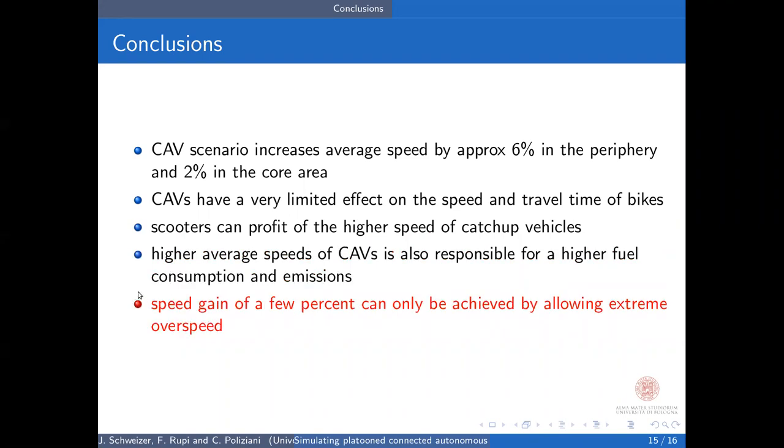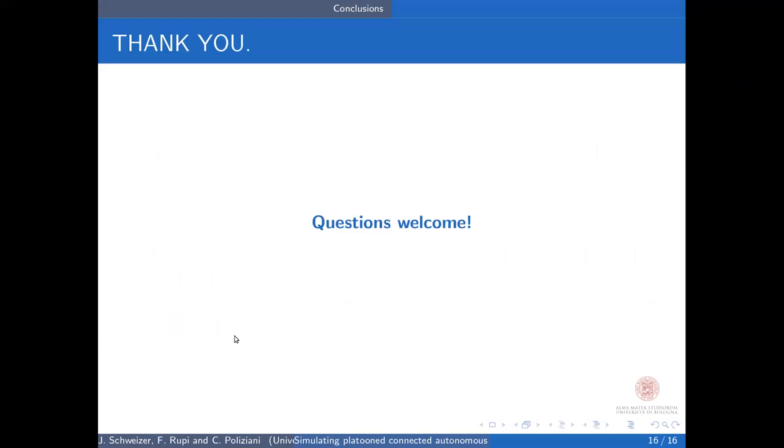Okay, again, speed gain is a few percent, can only be achieved with these extreme parameters that you have seen, so maybe, maybe with realistic assumption, the gains are not so significant. What we have seen is instead that in order to get more out of the platooning, we need special strategies for merging on freeways, and we also need absolutely to adapt the traffic lights system, or vehicle-to-ground communication, in order to exploit the formation of platoons. Okay, thanks for your attention.